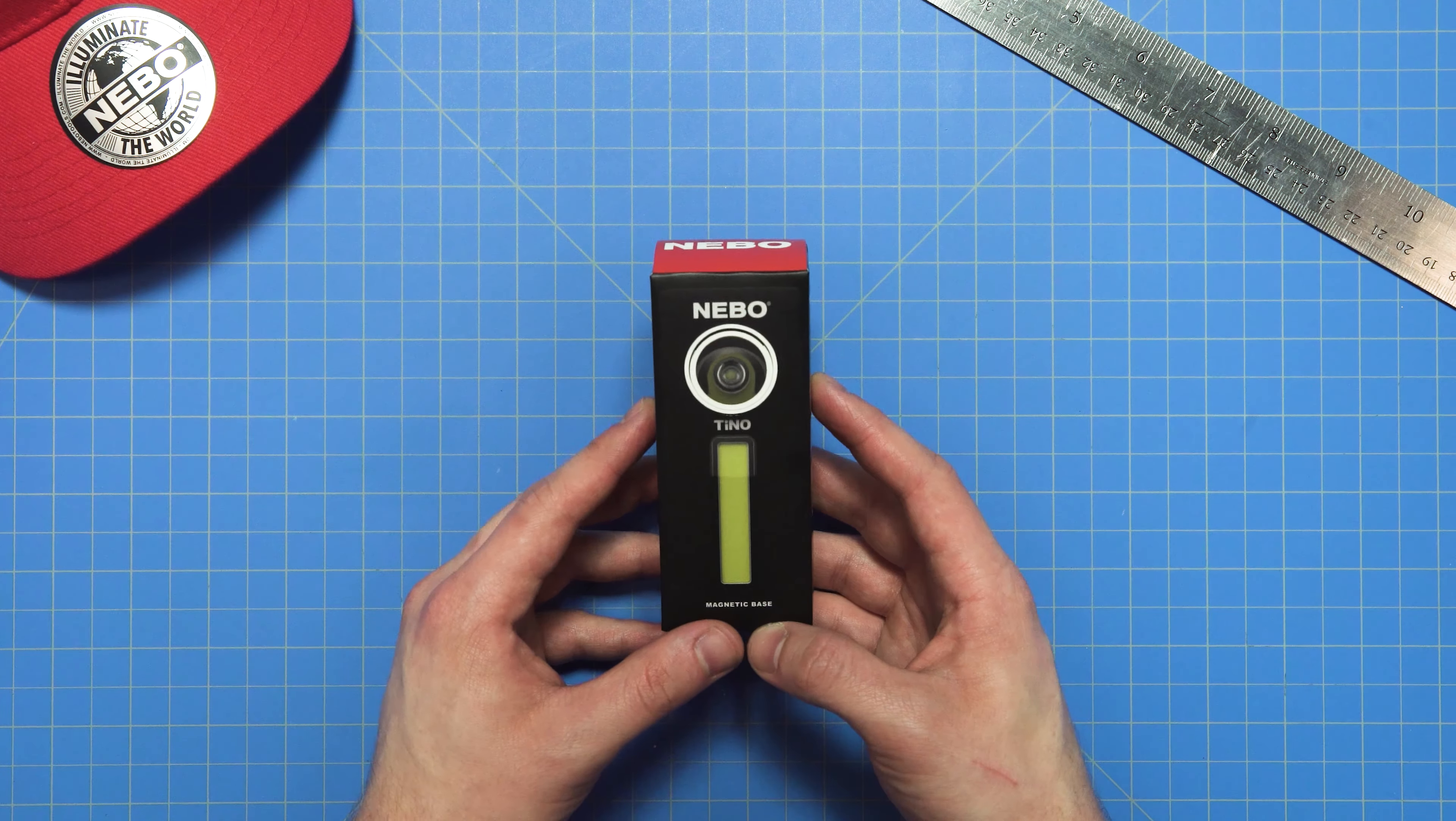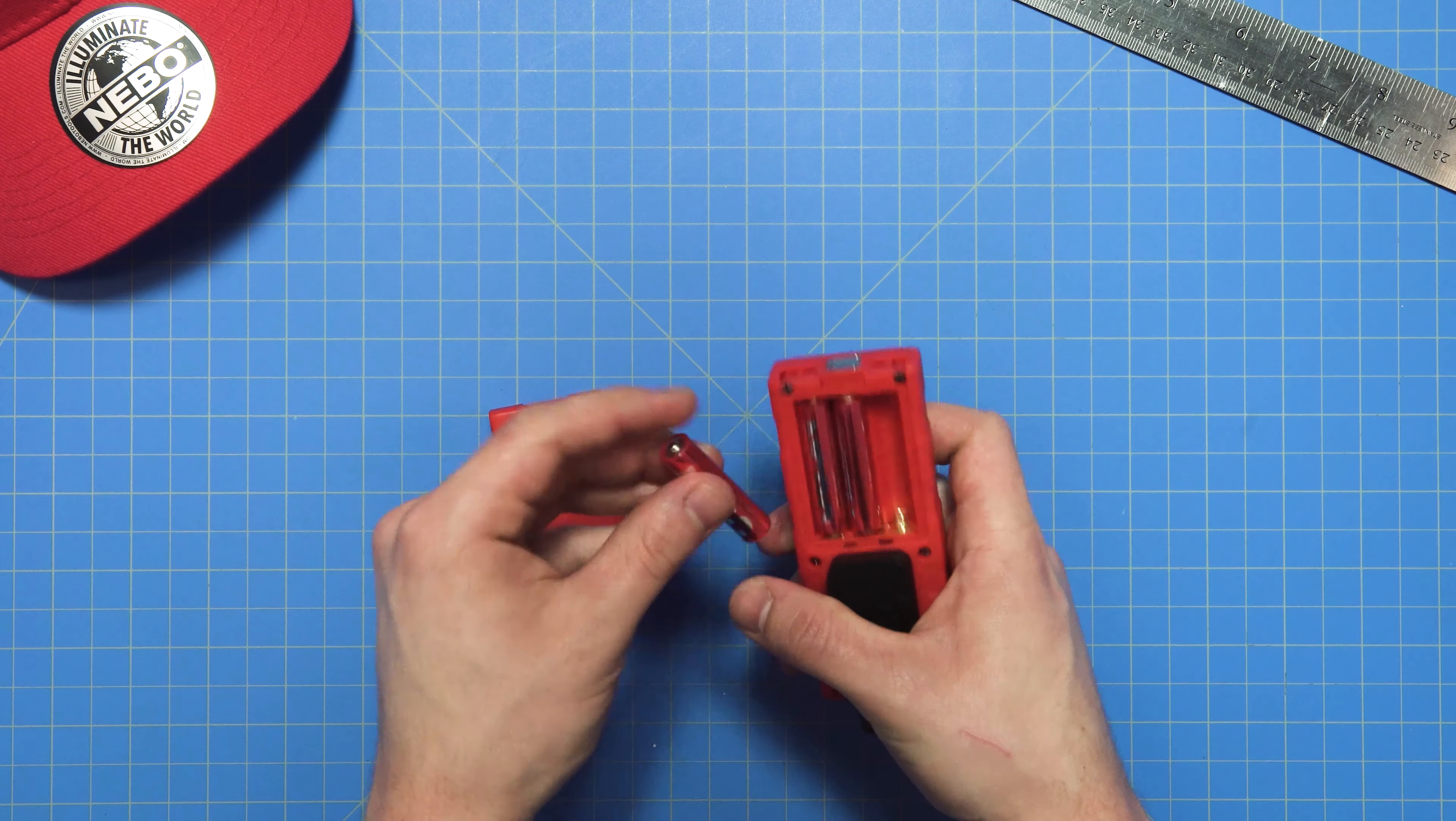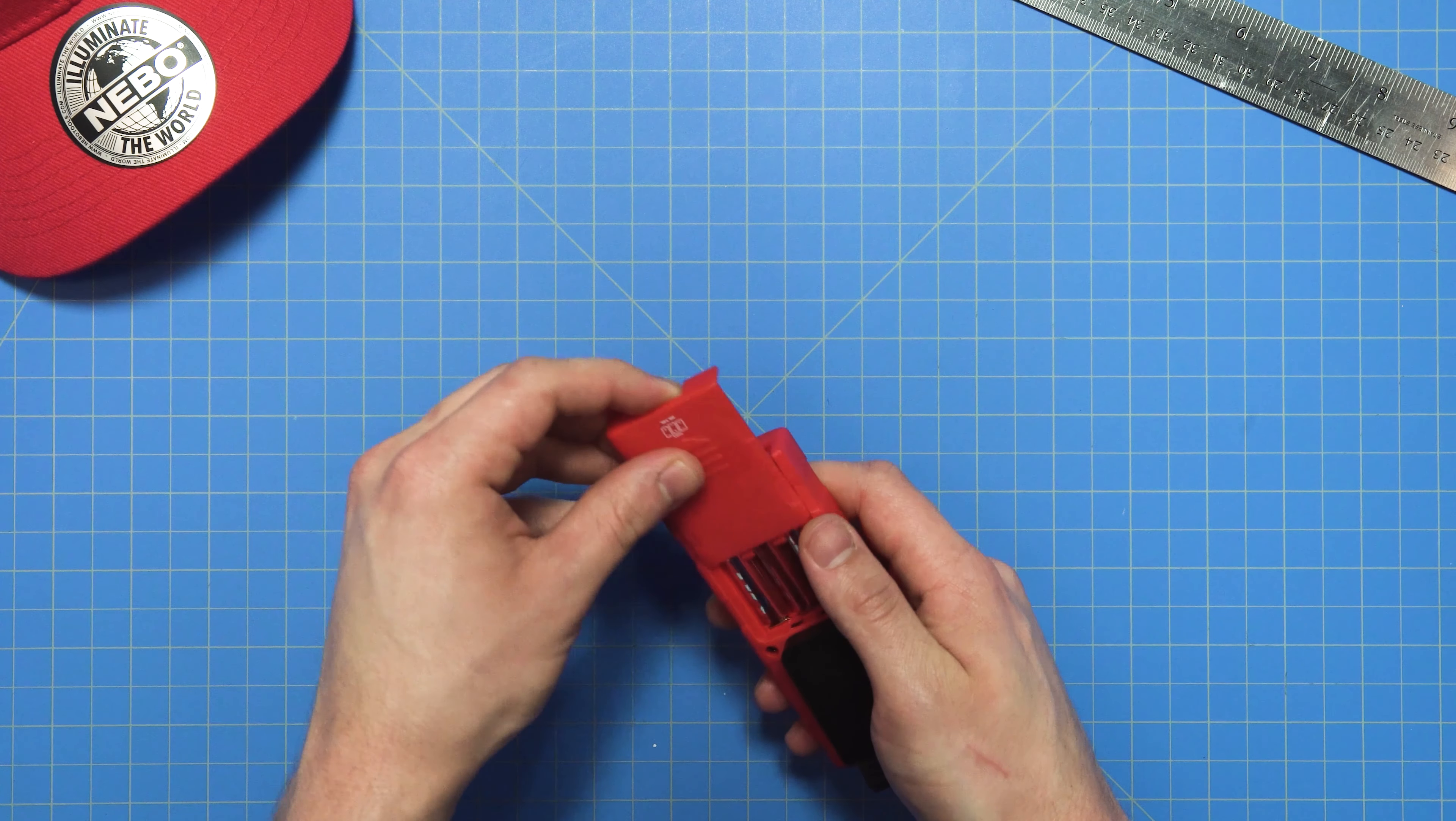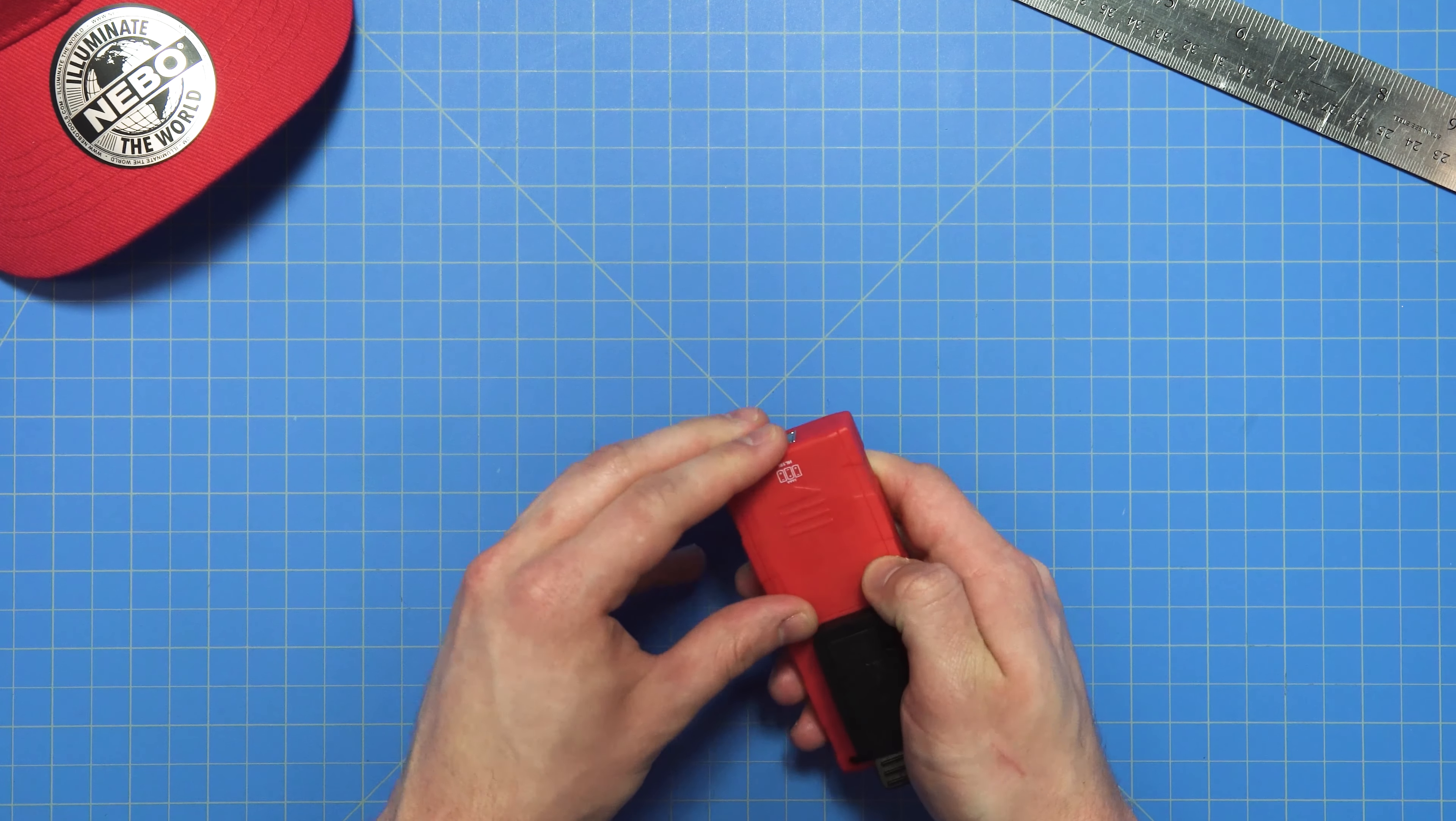The Tino runs off three AAA batteries and the battery compartment can easily be accessed by sliding the backplate down towards the magnetic base. Remove old batteries with ease and replace them with a fresh set following the diagram on the backplate. Once your new batteries are in, slide the backplate back into place and push it closed.